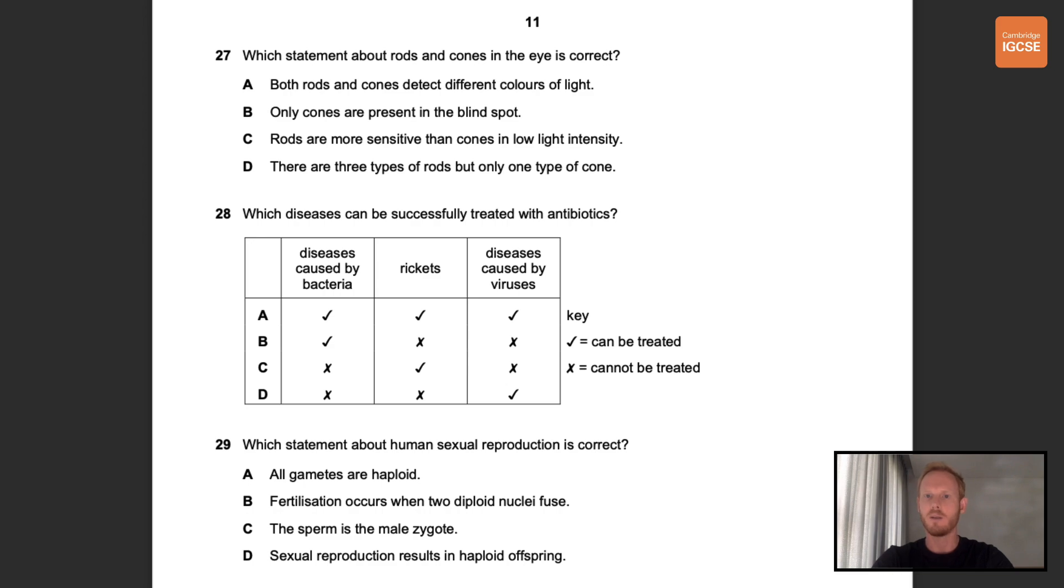Number 27. Which statement about rods and cones in the eye is correct? So rods and cones are the light-sensitive cells of the retina. The three different types of cones detect different colors of light, while rods are more sensitive to low light intensity. The correct answer is therefore C.